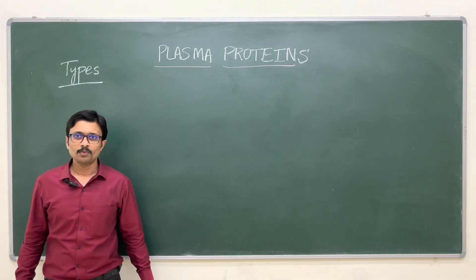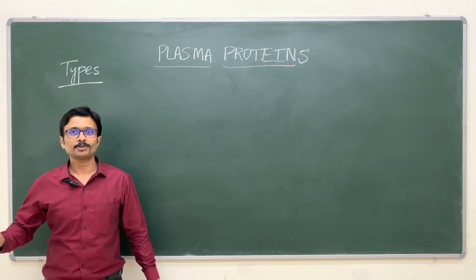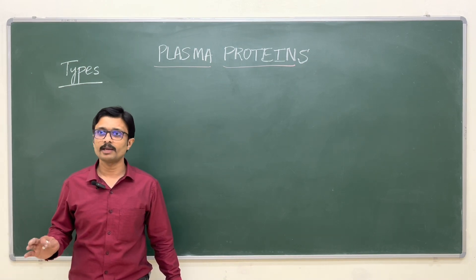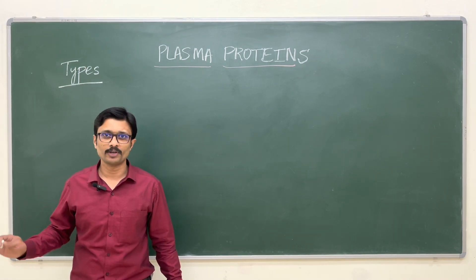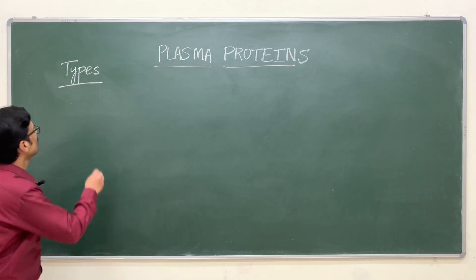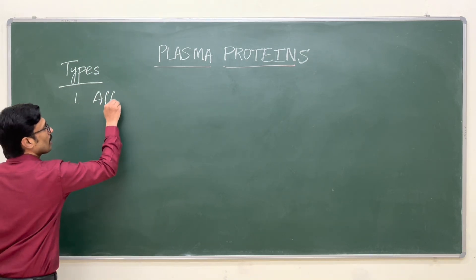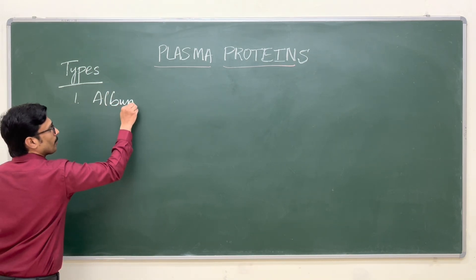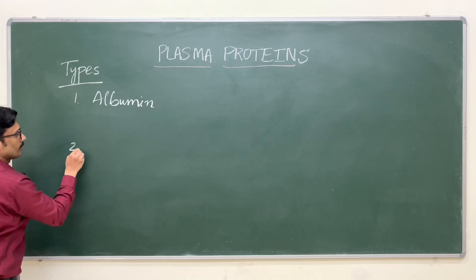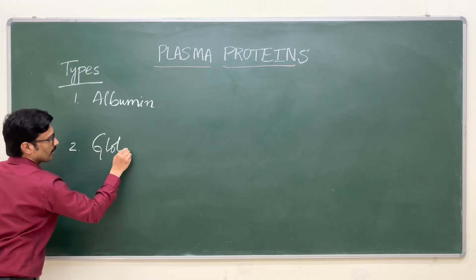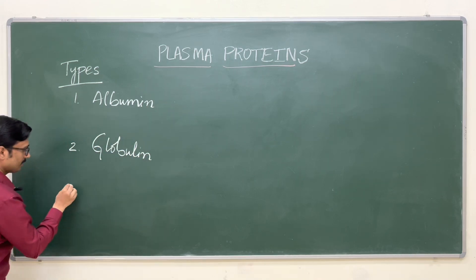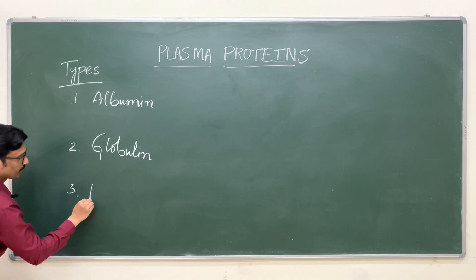Now let us understand what are the different types of plasma proteins. There are more than 100 types of plasma proteins; majorly they are albumin, globulin, and fibrinogen.